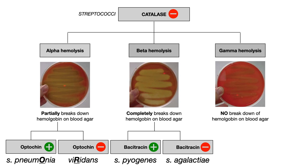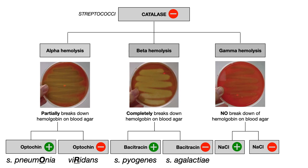We've already talked about the alpha-hemolytic and beta-hemolytic parts of this flow diagram, and starting with this video, we'll now begin to talk about gamma-hemolytic species. Just like with alpha and beta-hemolysis, gamma-hemolysis can further be subdivided to help you figure out what type of bacteria we're talking about, depending on whether or not the pathogen grows in 6.5% NaCl, which tells us which of two umbrella categories it falls into.